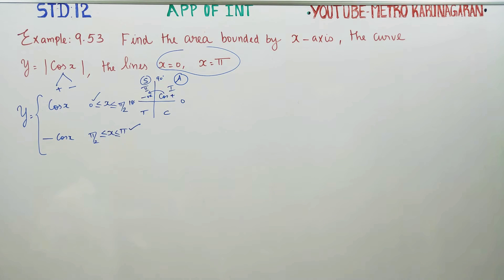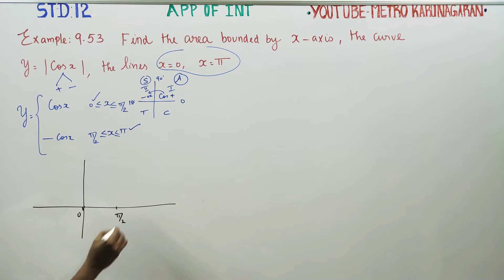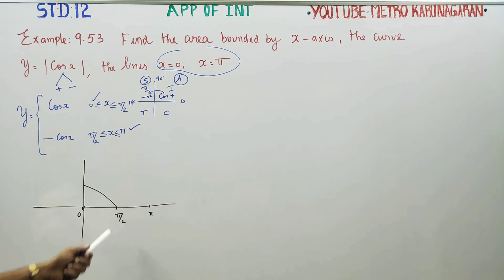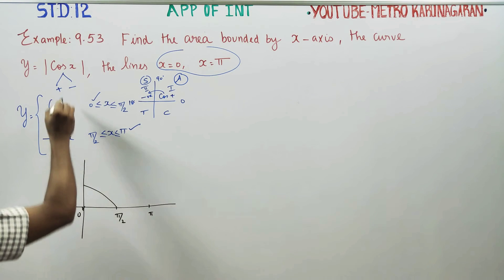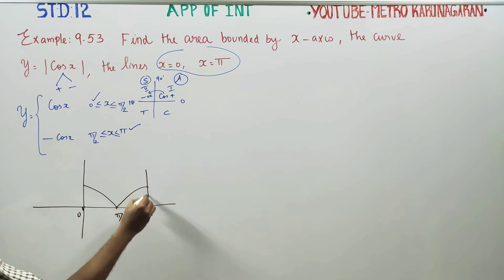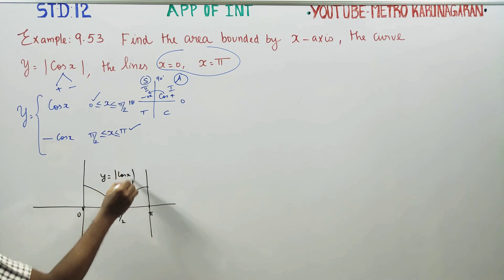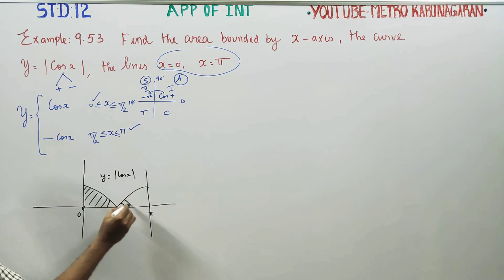I want the area bounded by the x-axis. You can draw a diagram. This is 0, this is 90, this is 180. Cos 0 value is 1, cos 90 is 0. Then minus of cos x — modulus always gives positive answers. The curve goes again. This is the diagram of y equal to modulus of cos x.